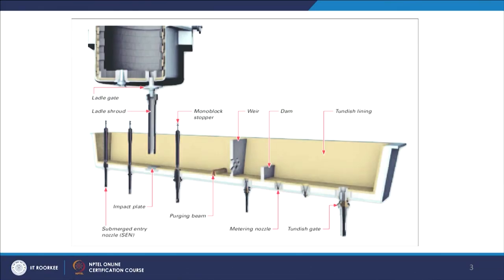Looking at the schematic of the tundish: there is the ladle which brings the liquid steel, and the liquid metal comes through the ladle shroud going into the tundish. The shroud immersion is done to ensure there is no direct contact of atmospheric gases with the steel coming out, as that could cause oxidation or formation of inclusion particles in the steel.